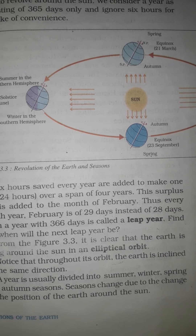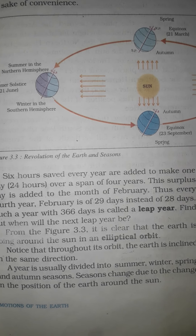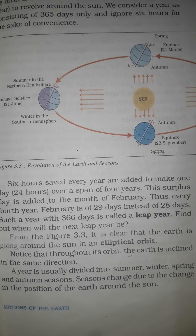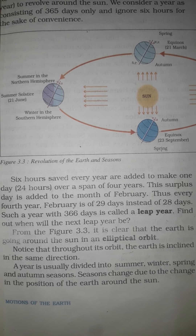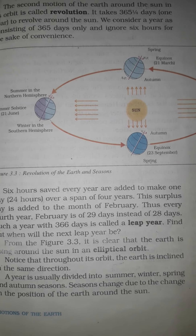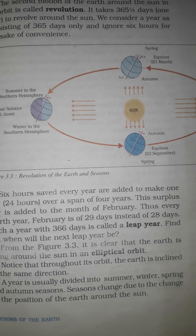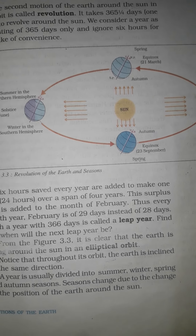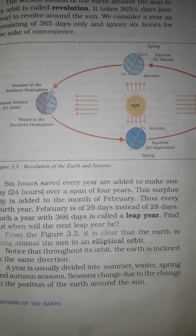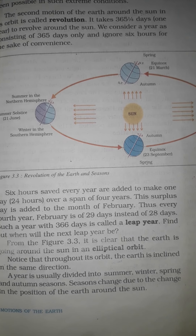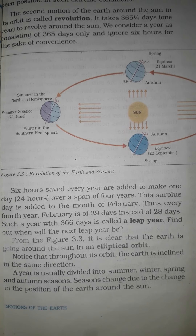Throughout its orbit, the earth is inclined in the same direction. A year is usually divided into four seasons: summer, winter, spring, and autumn. Seasons change due to the change in the position of the earth around the sun — revolution causes seasons.